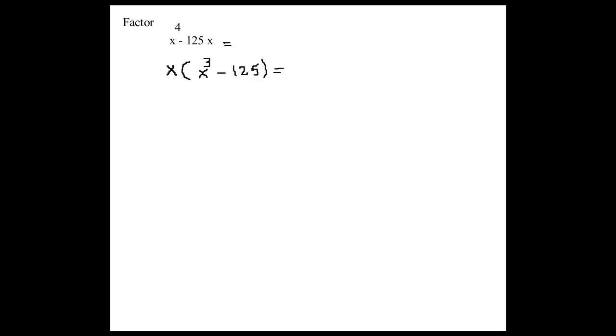Sunith explains that since the expression is in the form of A cubed minus B cubed, it should factor out to be A minus B times A squared plus AB plus B squared.